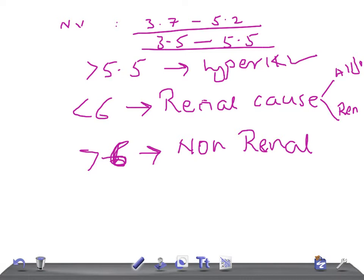If serum aldosterone is normal, it suggests a renal tubular defect. These are the things I am going to discuss later. But right now, I am going to talk about what are the EKG changes expected in hyperkalemia.